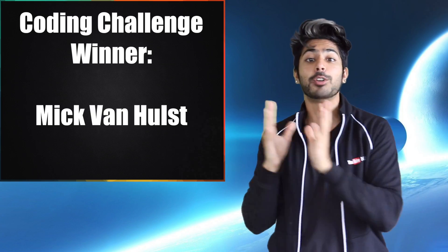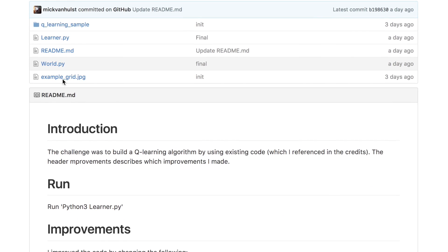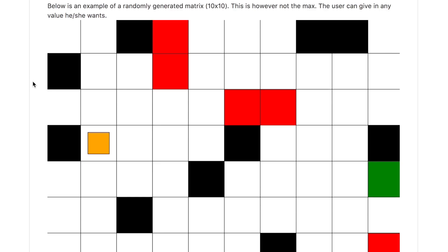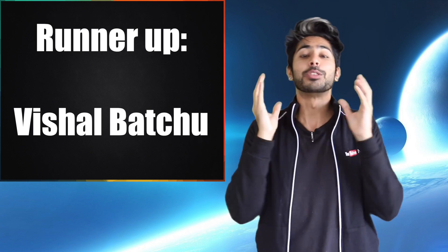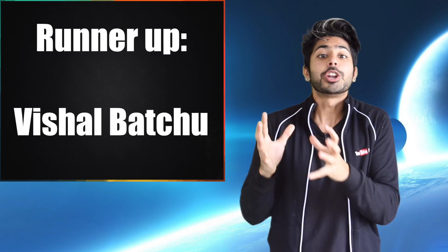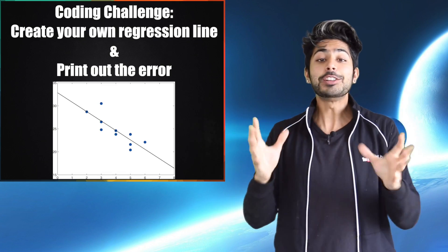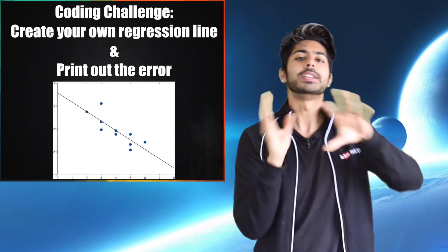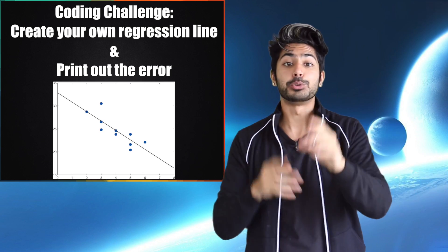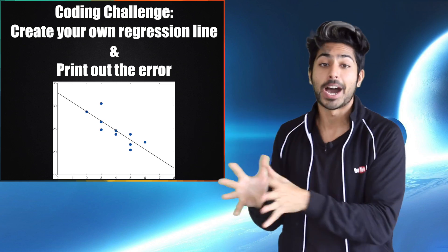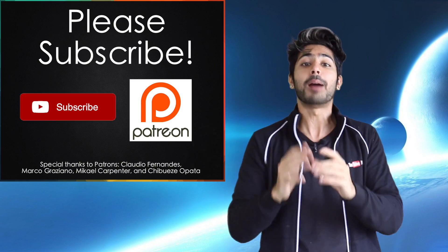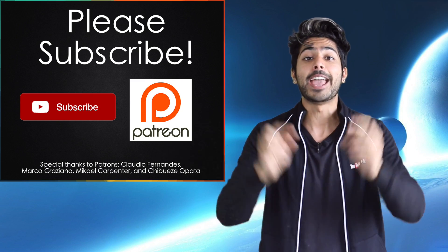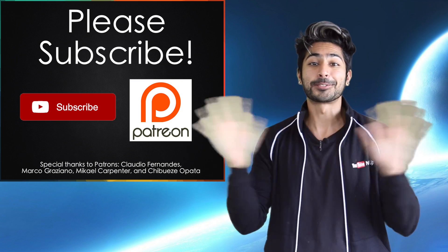The winner of last week's coding challenge is Mick Van Holtz. He modified the game world to be more complex and his Q-learning bot was much more efficient at reaching the goal than my demo bot — wizard of the week. The runner up is Vishal Bachu, who generated maps using cellular automata. The challenge for this video is to use scikit-learn to create a regression line for a different dataset that I'll provide and print out the error between your prediction and the actual value. Details are in the readme — post your GitHub link in the comments and I'll announce the winner in one week. Please hit that subscribe button — thanks for watching.